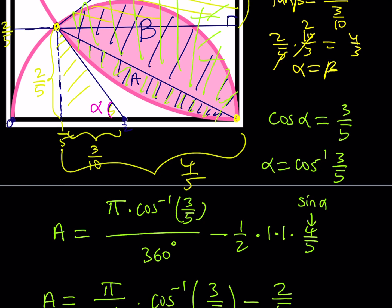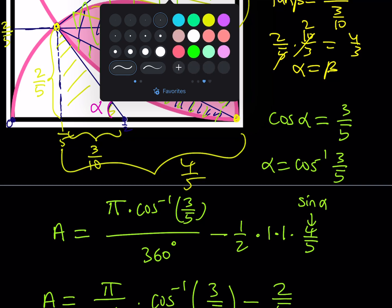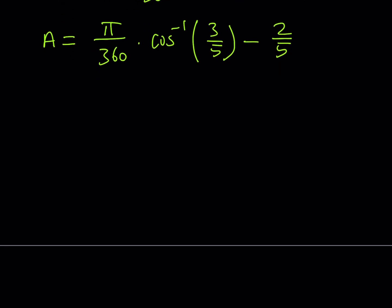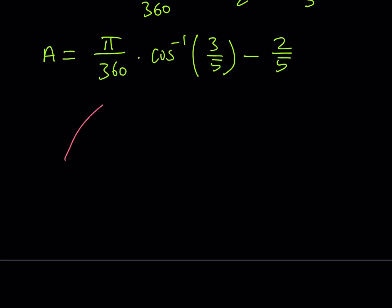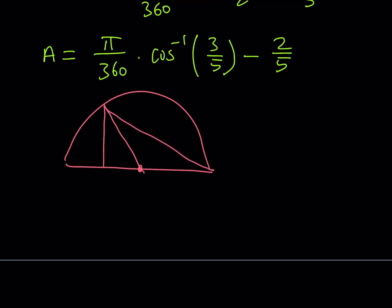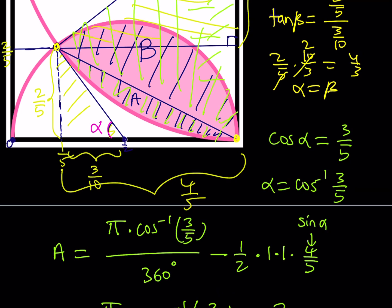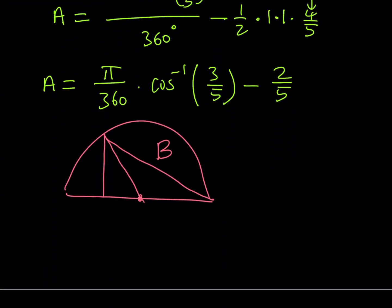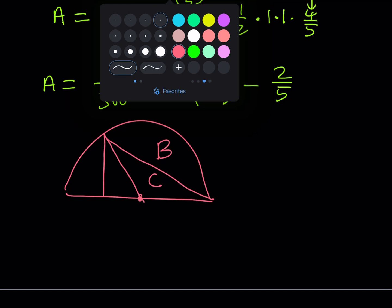Finding B is more interesting because it's a somewhat unusual region. I'll redraw the semicircle picture: there's a center, a circular arc covering an obtuse angle, and I drop in the boundary and connect the pieces. I call the bumpy region B, and I define an adjacent region C. Notice that B + C can be found easily — it forms a circular sector.